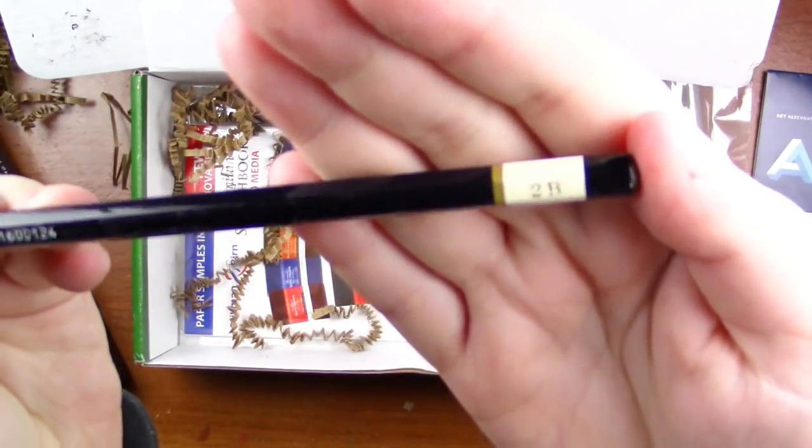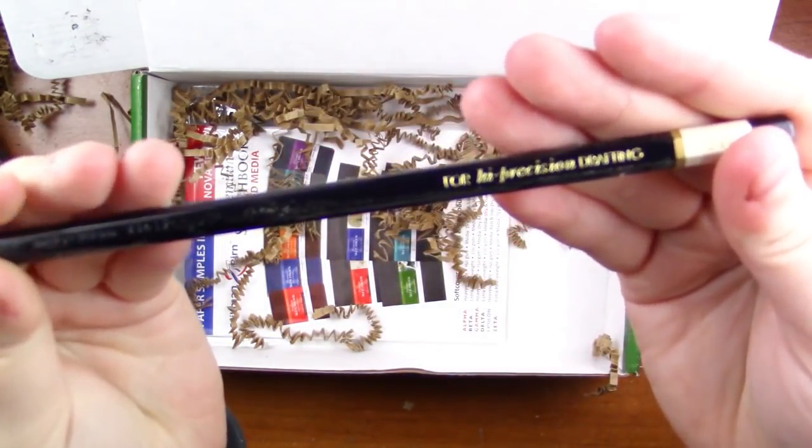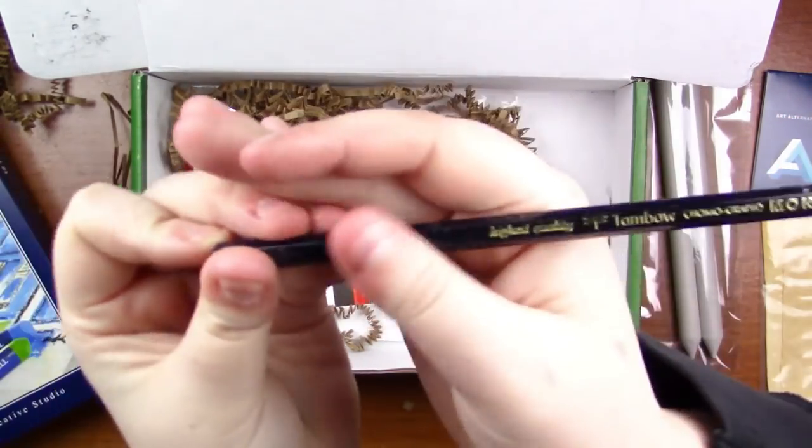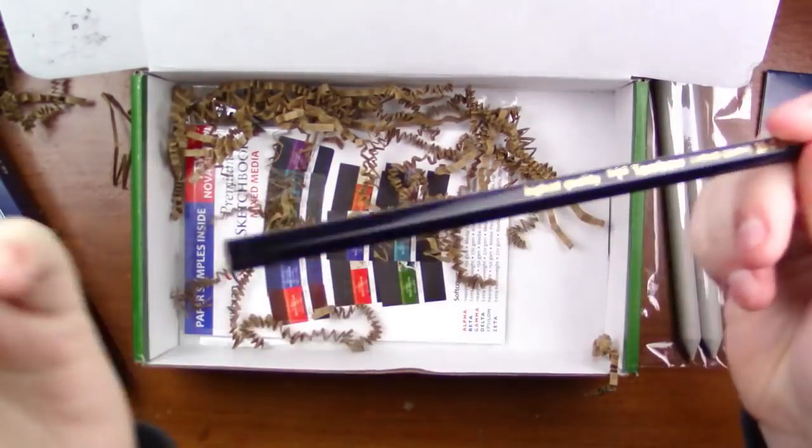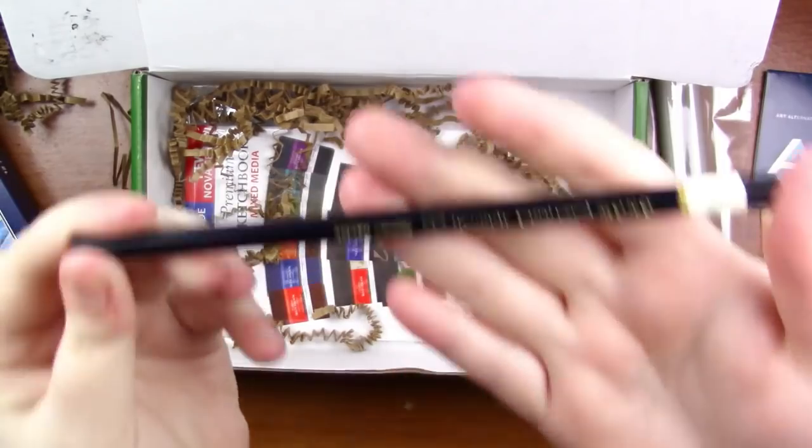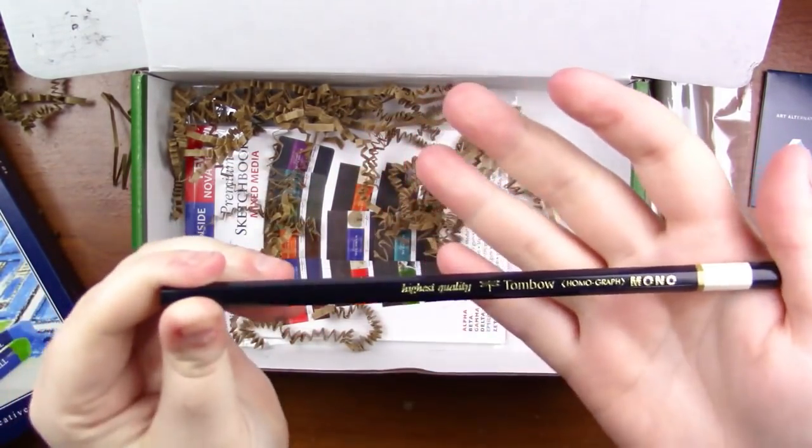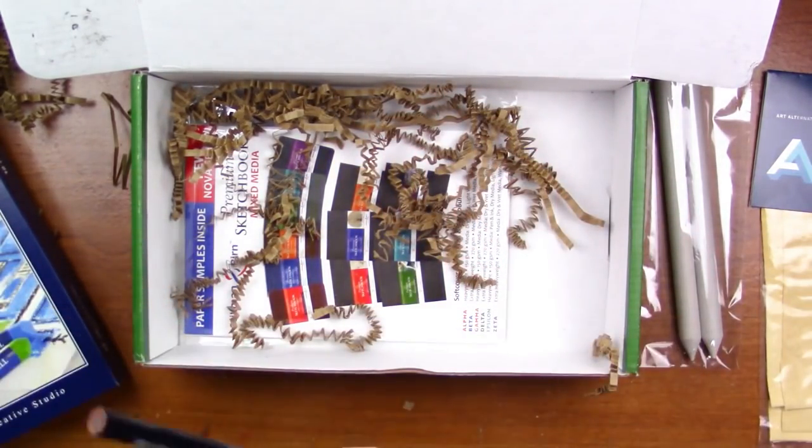Then we got a 2B, my favorite character from Nier Automata. Tombow pencil. This is a Tombow Mono pencil. This is dusty because of the worm so that's okay. I actually have another one of these that I have not sharpened but I'll sharpen this because I want to use it for this video.